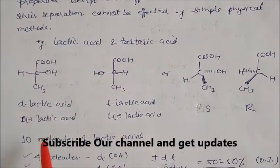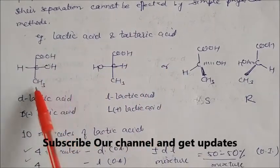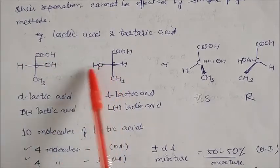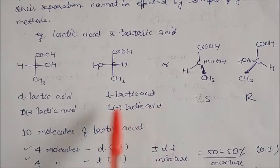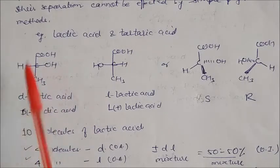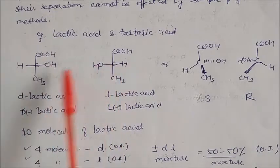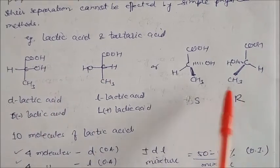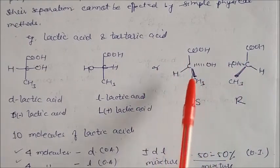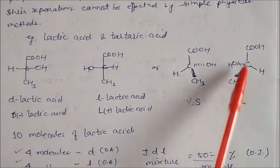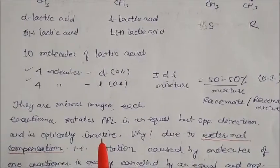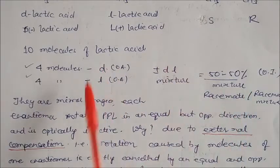I have taken one example — lactic acid and tartaric acid. This is the example of tartaric acid — two hydroxy propanoic acid. This is your D lactic acid with OH on the right-hand side, and this is your L lactic acid with OH on the left-hand side. This is the S structure of lactic acid and this is the R structure. I hope you know how to draw R and S. Now we will see how we understand lactic acid racemic mixtures with the help of this example.